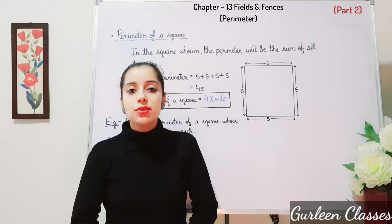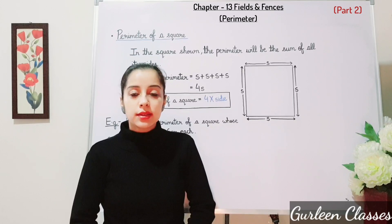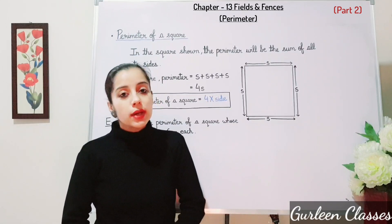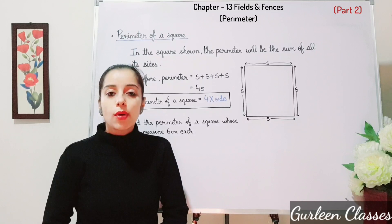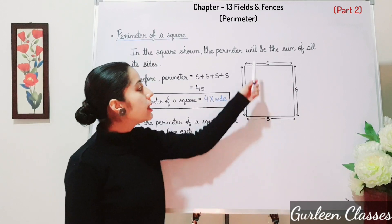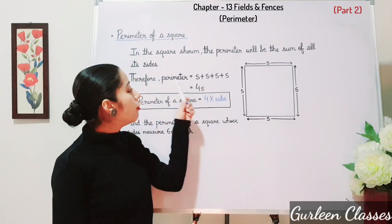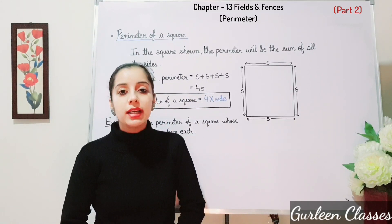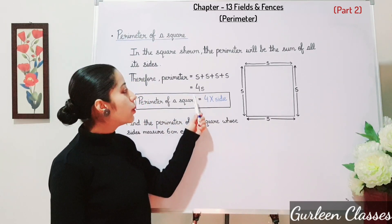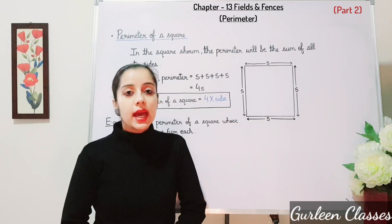We will now learn to calculate perimeter using a formula. First is the perimeter of a square. We know the property of a square — all the sides are equal. So the perimeter will be S plus S plus S plus S, that is 4 times S, which is 4S. Since multiplication is repeated addition, the formula is: perimeter of a square equals 4 into S, where S is the side.